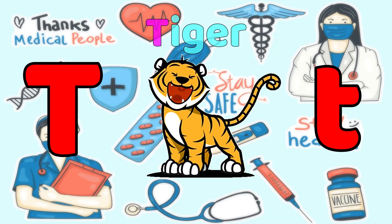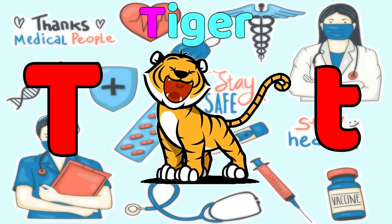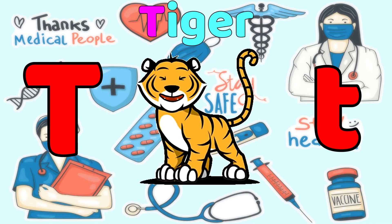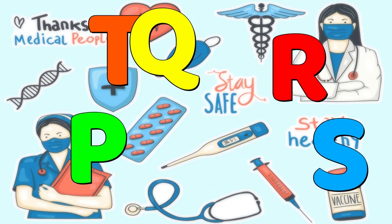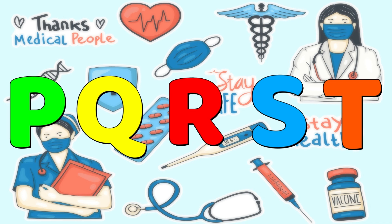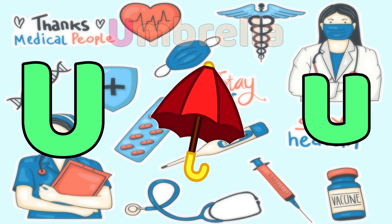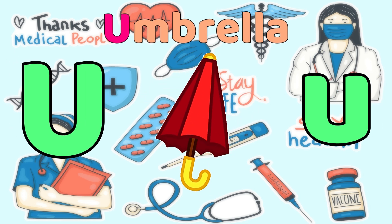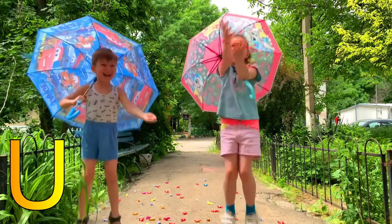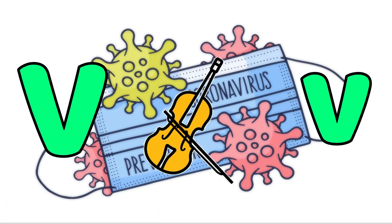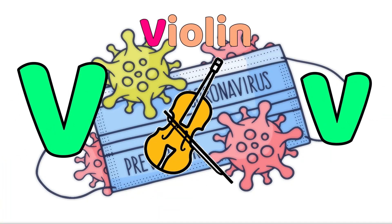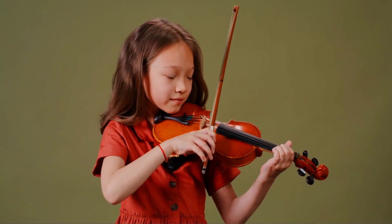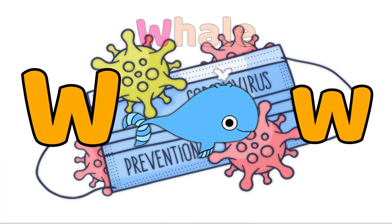T is for Tiger. T, T, Tiger. T, T, Tiger. T, Tiger. U is for Umbrella. U, Umbrella. U, Umbrella. U, U, Umbrella. V is for Violin. V, V, Violin. V, V, Violin. V, Violin.